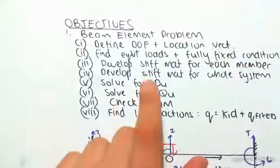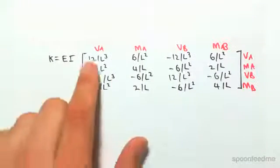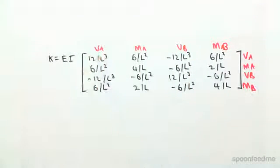So now we've done finding equivalent loads in fully fixed condition, that's done. We now need to develop our stiffness matrix for each member. So we know that the general formula for stiffness matrix is this thing here, EI outside of all that.